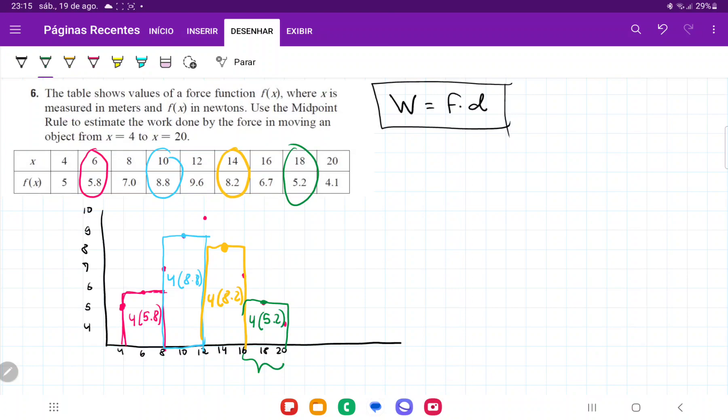We have estimated this total work using these chunks. So we can say that the work is going to be equal to—actually, I'm going to put units here. So that's 4 meters times 5.8 newtons, plus 4 meters times 8.2 newtons, plus 4 meters times 5.2 newtons.